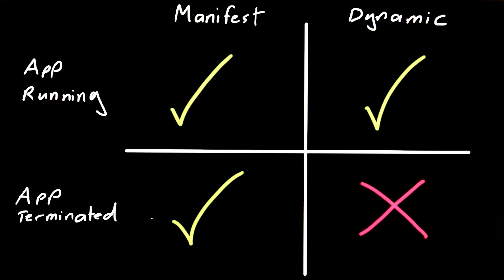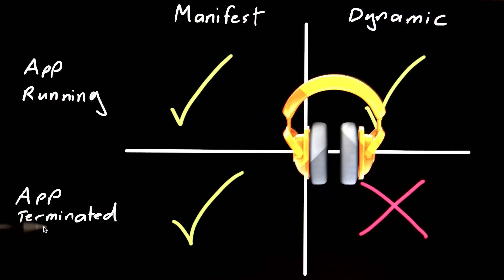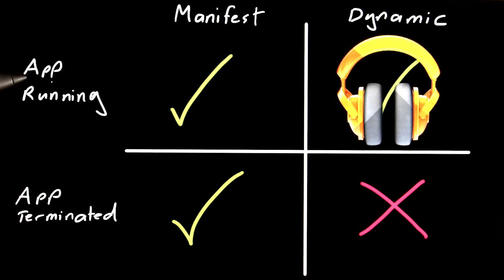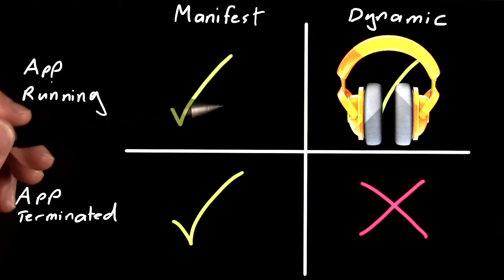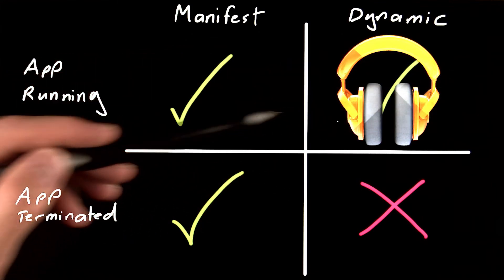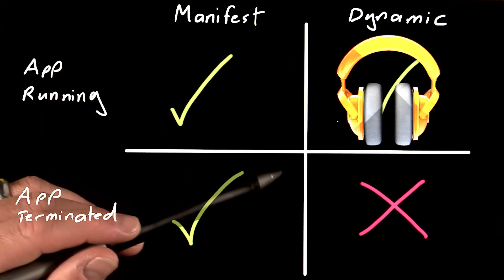For example, I usually code with my noise cancelling headphones on. So a music app like this might want to register a runtime receiver to listen for the system intent broadcast that announces when headphones are unplugged. That will allow it to automatically pause playback when the audio routing switches from headphones to speakers. In this case, we can use a runtime receiver because the app is guaranteed to be running if music is playing.